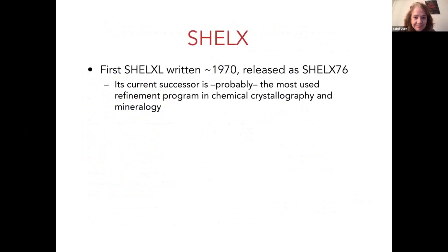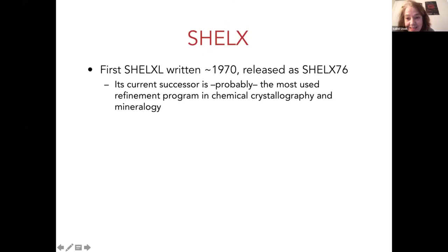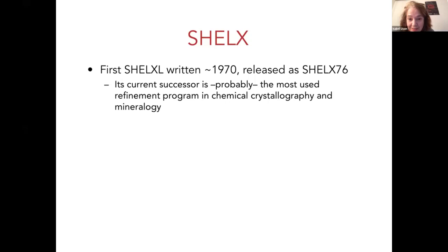Looking back at the great talk given yesterday describing the situation in the crystallographic Cambrian period and all the refinement programs that existed in those days — SHELXL was a survivor of that time. The first SHELXL was written around 1997 and released somewhat later. At least two years ago, before the pandemic, it was the most used program in determinations of chemical crystallography for small molecules. SHELXL looks at atoms and is very general and flexible for any crystallographic question.